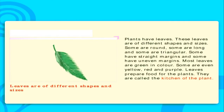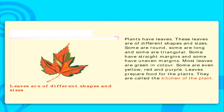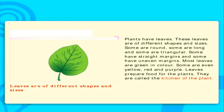Leaves of plants. Plants have leaves. These leaves are of different shapes and sizes. Some are round, some are long, and some are triangular. Some have straight margins and some have uneven margins. Most leaves are green in colour. Some are even yellow, red, and purple.